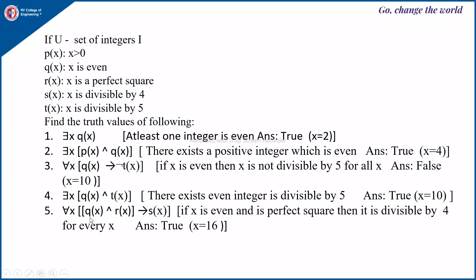Next, ∀x[(q(x) ∧ r(x)) → s(x)]: q(x) is x is even and r(x) is x is a perfect square. If x is both even and a perfect square, it must be divisible by 4. So for all x, if x is even and a perfect square, then x is divisible by 4. For example, x = 16 is even and a perfect square, and any even perfect square satisfies this condition. This statement is true.